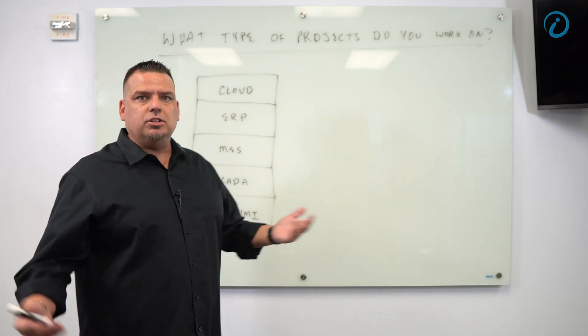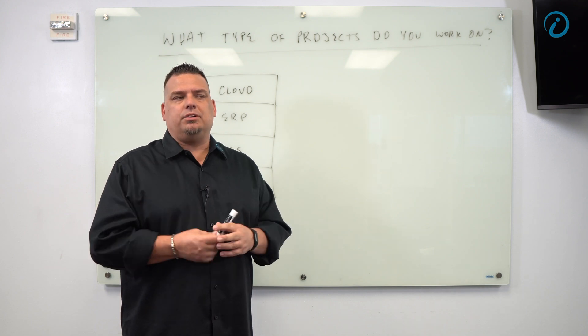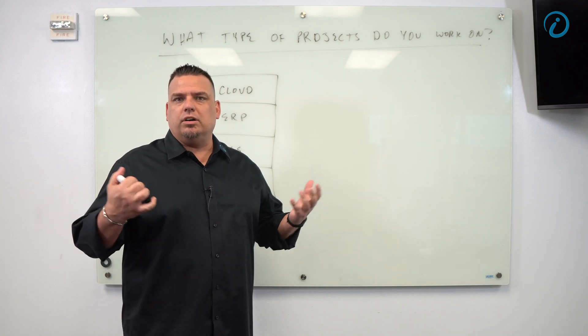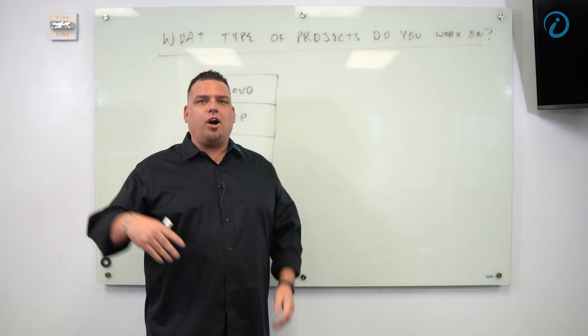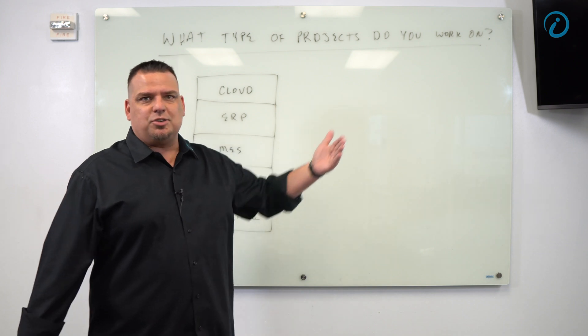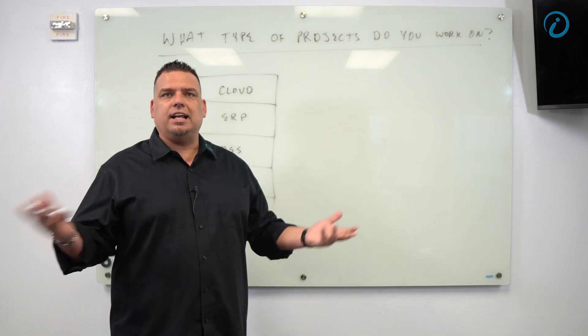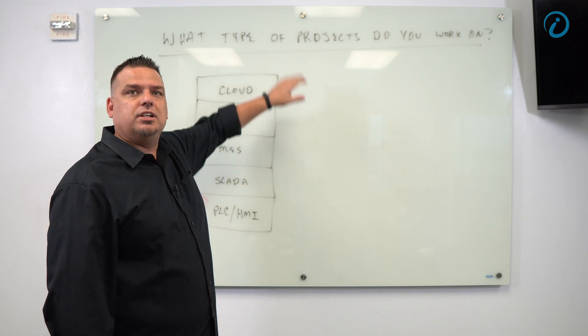I mean, we generally never lose a bid where we're always the lowest cost when we go head to head with another integrator. And it's because we're using technologies that integrators just aren't using. When our quote is $150,000 to do this massive system and everyone else quotes $750,000, they don't understand how we can do that. And it's because of the approach we take with digital transformation and IoT.